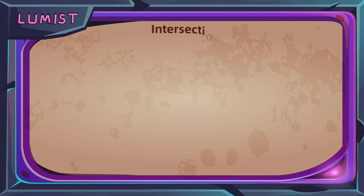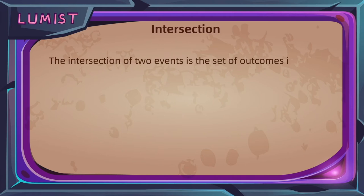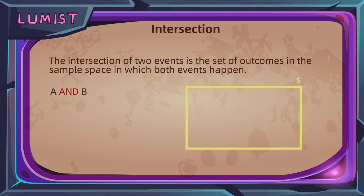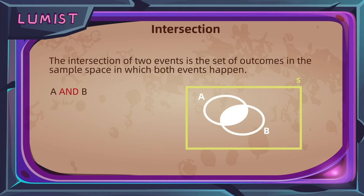The first relation we discuss is called the intersection. The intersection of two events is the set of outcomes in the sample space in which both events happen — in short, A and B happening. The keyword here is AND. On the diagram, it is the part that is both inside the circle of A and the circle of B — that little overlap here is the intersection of event A and event B. Notation-wise, we represent this with an upward hump-shaped symbol, written as A intersection B.